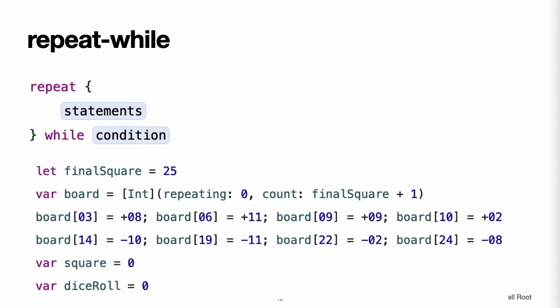Repeat-While. The other variation of the while loop, known as the repeat-while loop, performs a single pass through the loop block first before considering the loop's condition. It then continues to repeat the loop until the condition is false. Note: the repeat-while loop in Swift is analogous to the do-while loop in other languages. Here's the snakes and ladders example written as a repeat-while loop; the values of final square, board, square, and dice roll are initialized in exactly the same way as with a while loop.